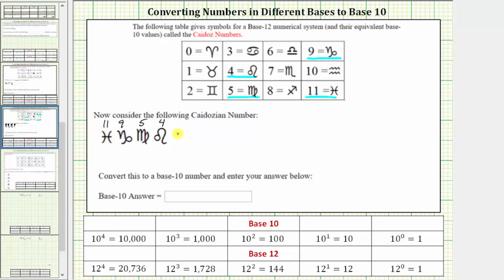Let's also write the place value below each symbol. Starting on the right, we have the 12 to the zero or ones place value. Moving to the left, we have the 12 to the first or 12's place value. Next we have the 12 to the second or 144's place value, and then we have the 12 to the third or 1728's place value.